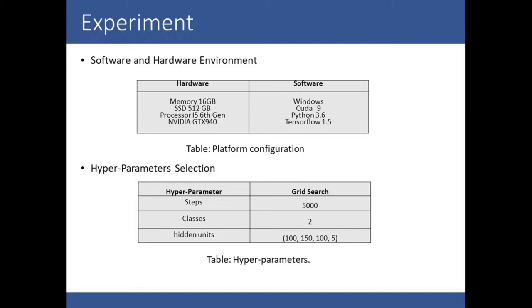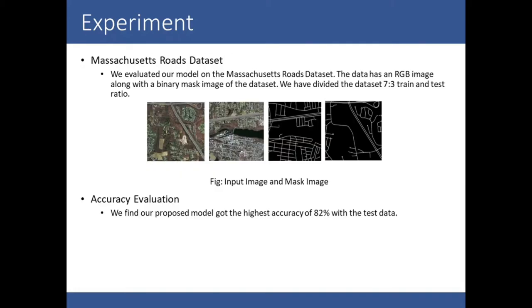Using the DNN classifier in TensorFlow, our hyperparameters are: steps of 5000, classes of 2, and hidden units of 10, 150, and 100. For the dataset, we used RGB images along with binary mask images. The dataset was divided into a 7-to-3 training and test ratio.